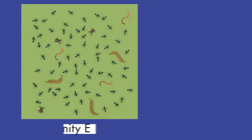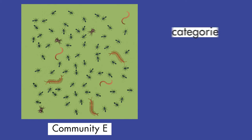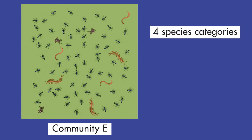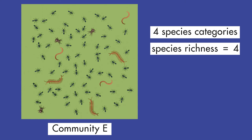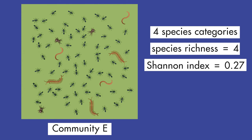A community with the same species richness but with organisms less evenly distributed would have a lower Shannon Index. In this example, community E also has 76 organisms in four species categories, so its species richness is 4, the same as community D. However, since most of the organisms are in one category, the Shannon Index is only 0.27, which shows less biodiversity.